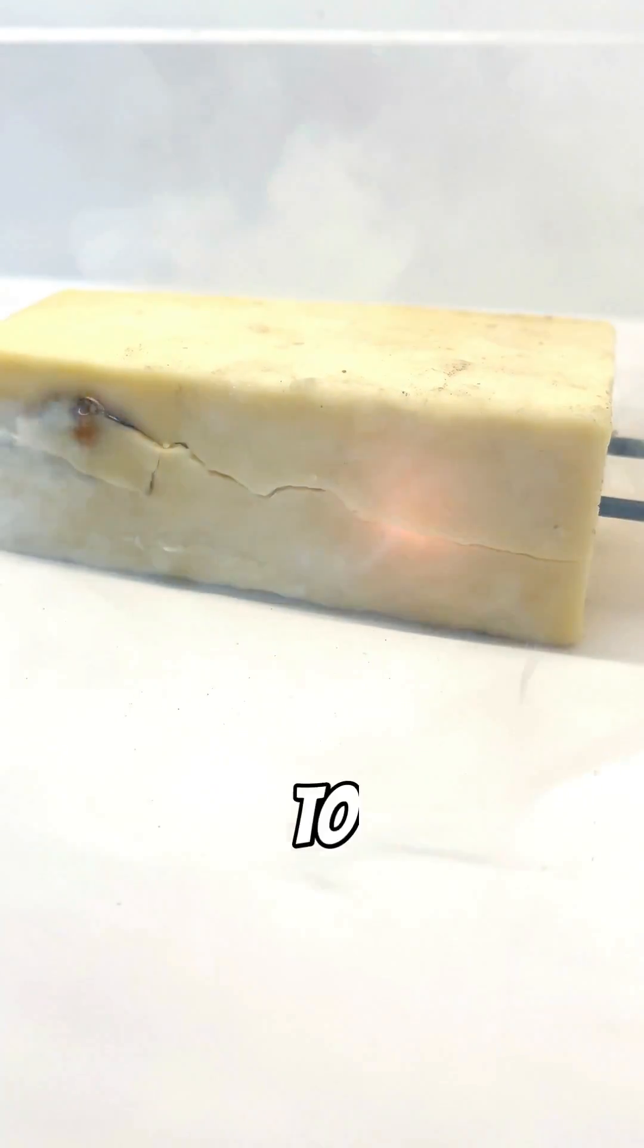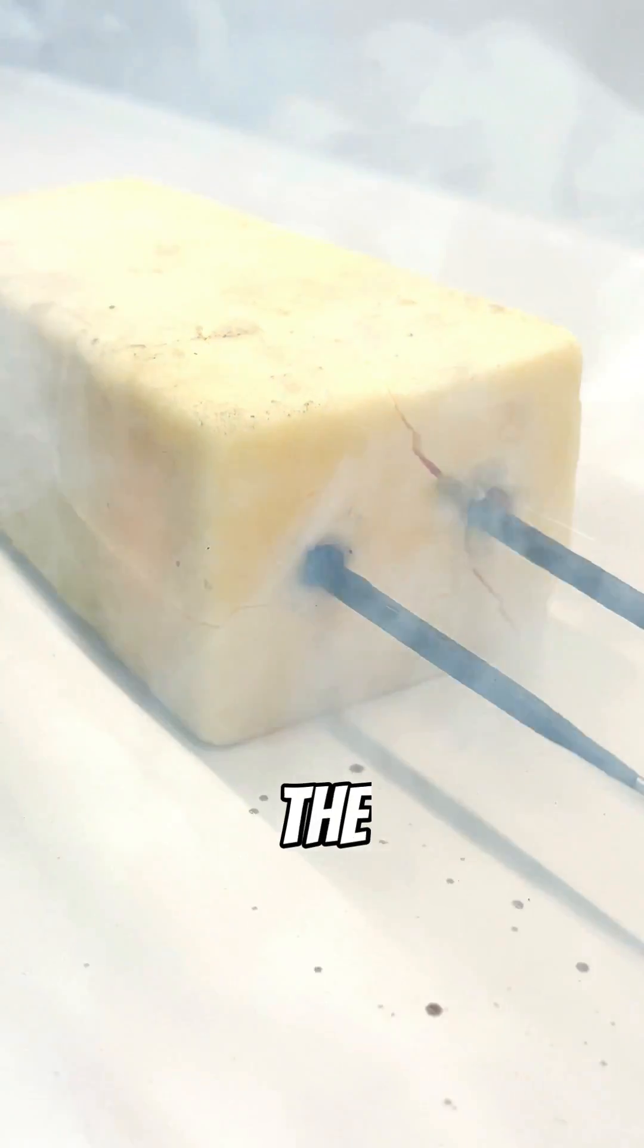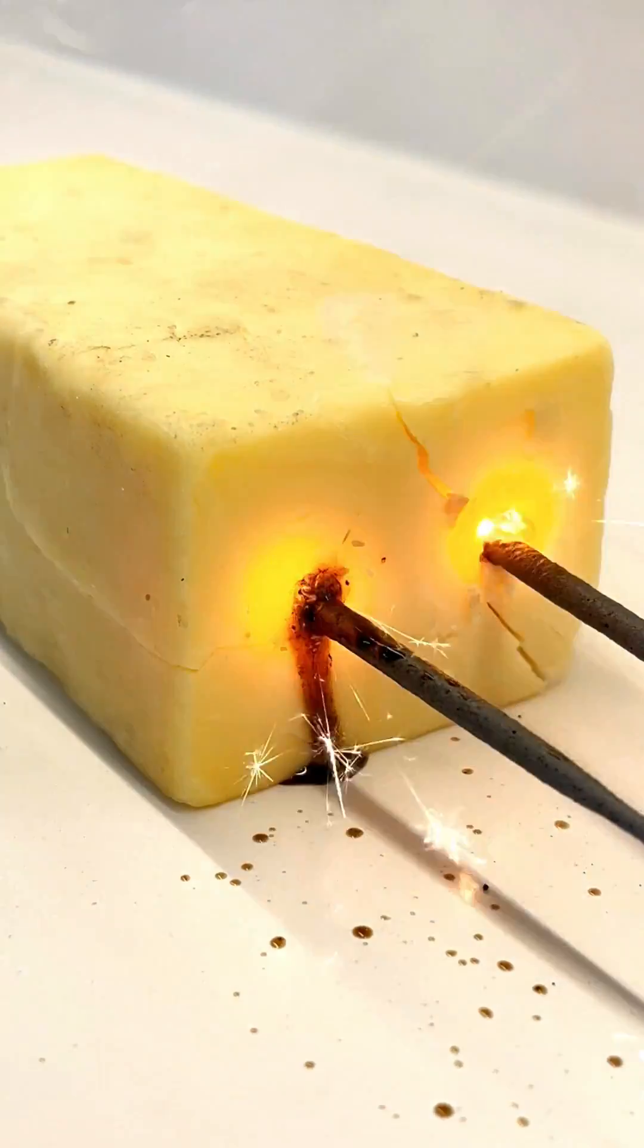It started absolutely pouring out smoke. This is really giving another meaning to smoked cheese. As it approached the end, this black liquid started oozing out of the hole. What is that stuff?